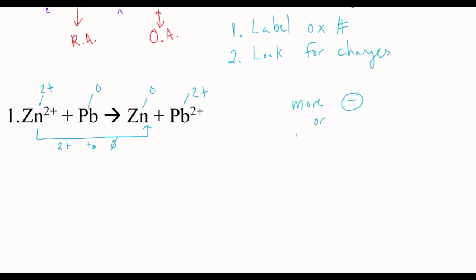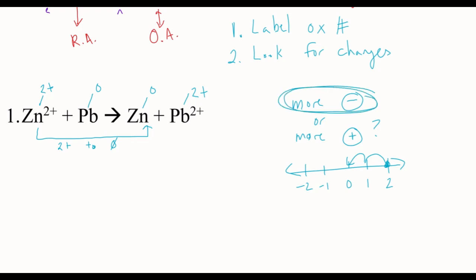This is the tricky part where you have to think about what's actually happening. When you go from 2+ to 0, is it more negative or more positive? The easiest way to think about this — think about it like a number line: negative 2, negative 1, 0, 1, 2. We're starting at positive 2 and going down to 0. That is something that became more negative, and if something is becoming more negative, that means it's gaining electrons because electrons are negative. So it's gaining electrons — gaining electrons is reduction.